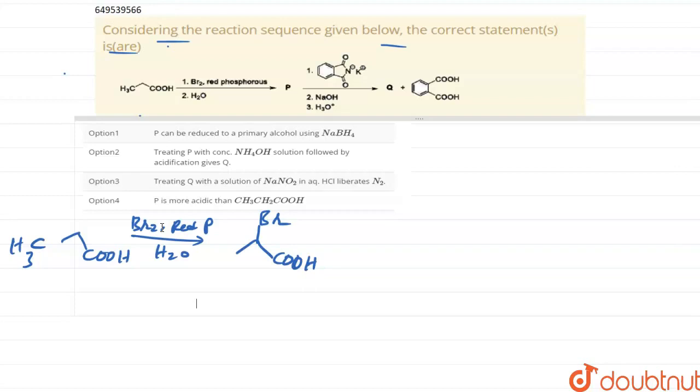So this group it will form. It is more acidic than acetic acid, so CH3-CH2-COOH, ethanoic acid.